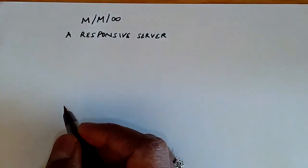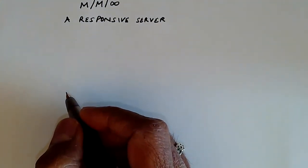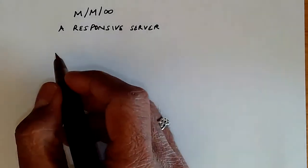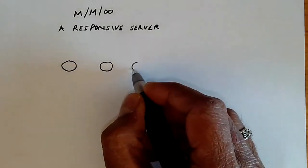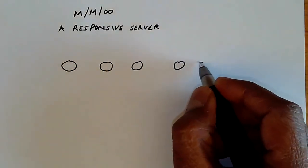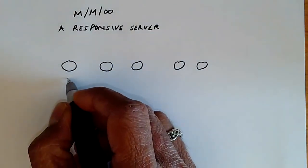Now to study this queue, it turns out it's actually not very difficult because we start by just drawing the state diagram. So we have over here each state represents the number of customers in the queue.